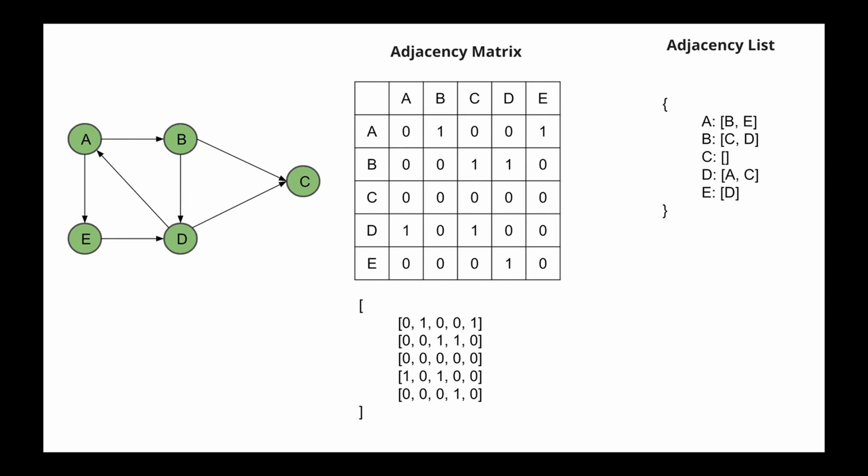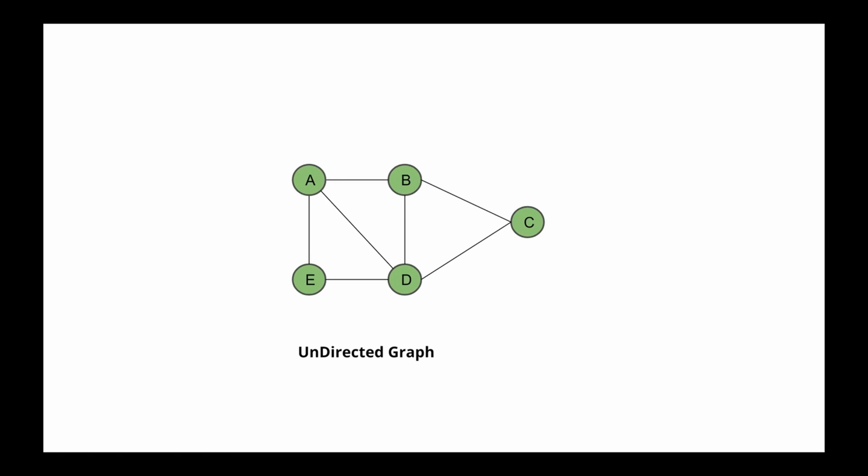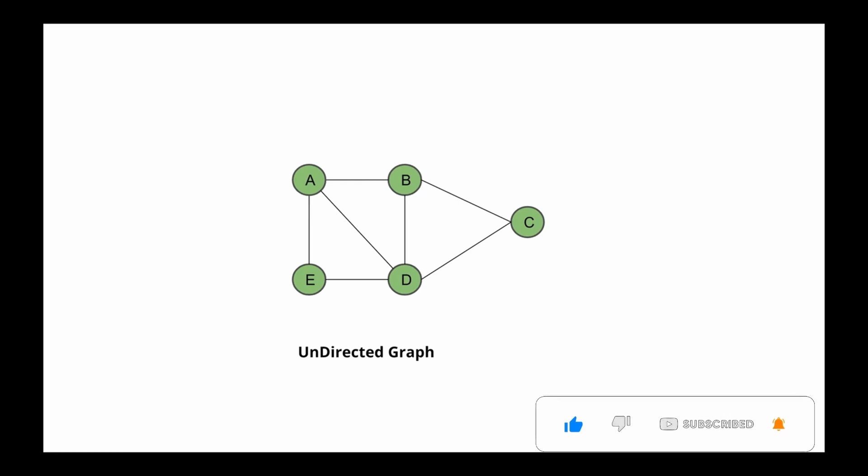I hope this was useful and you now understand what a graph data structure is, the different types of graphs, and how it can be represented in both an adjacency list and an adjacency matrix. For your assignment, I would suggest you try creating an adjacency matrix and an adjacency list for the undirected graph by yourself to consolidate what you have learned. Join me in the next video to check the correct answer and also to learn how to traverse a graph. Please support my channel by liking this video and subscribing. See you in the next video!